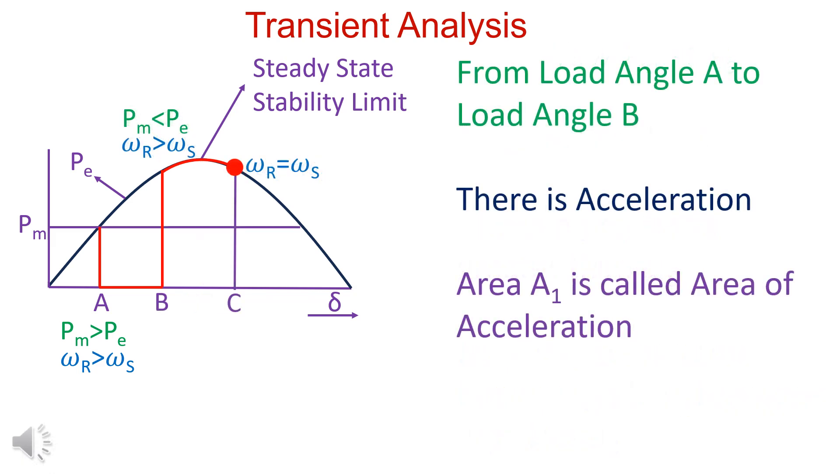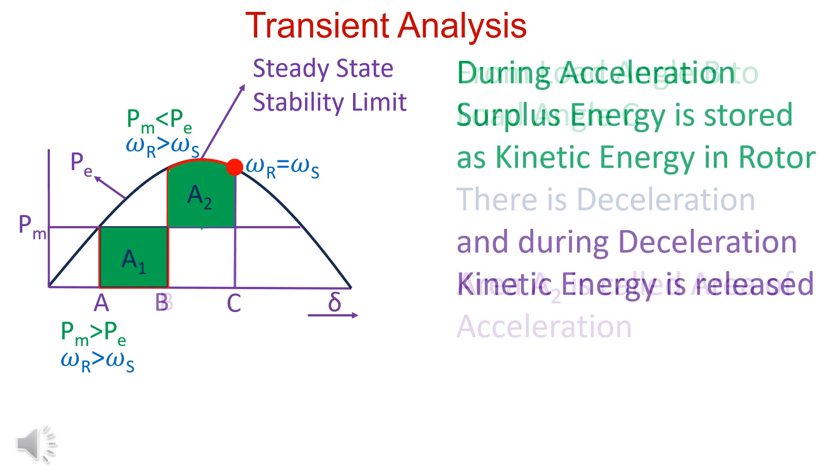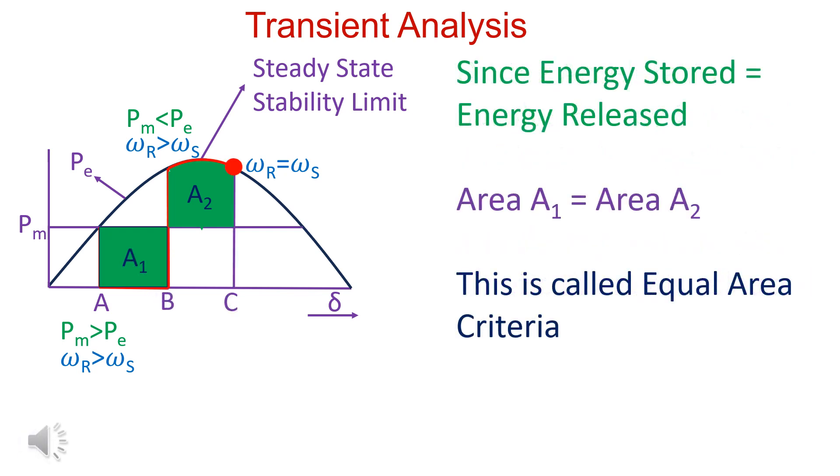From load angle A to B, there is acceleration. Area A1 is called area of acceleration. From load angle B to C, there is deceleration. Area A2 is called area of deceleration. During acceleration, surplus energy is stored in rotor. During deceleration, surplus energy is released. Since energy stored is equal to energy released, these areas A1 and A2 are equal. This is called equal area criteria.